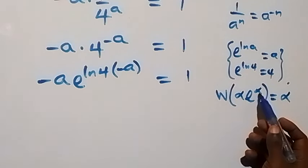The difference here is that we have ln 4 in the exponent. To make the coefficient also have ln 4, let's multiply through by ln 4. Then this will become minus a ln 4 times exponent of minus a ln 4, and on this side we have 1 times ln 4, which gives us ln 4. If you are enjoying this class, give a thumbs up and subscribe to my channel. Now let's apply the Lambert W function on both sides.